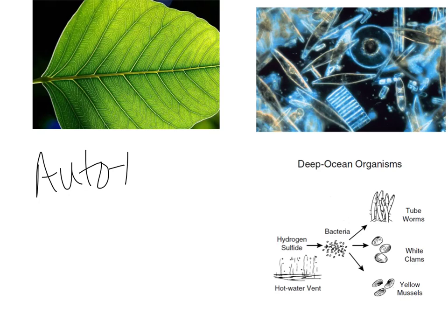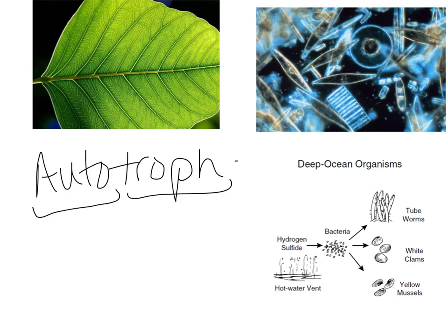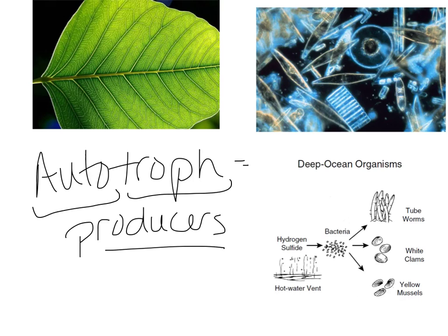Let's talk about what an autotroph is. Remember, 'auto' is self and 'troph' is nutrition. So autotrophs are self-feeding — they produce their own nutrition. Another word for an autotroph is producer. They produce all of the food energy that's going to be used throughout the entire food web or food chain.